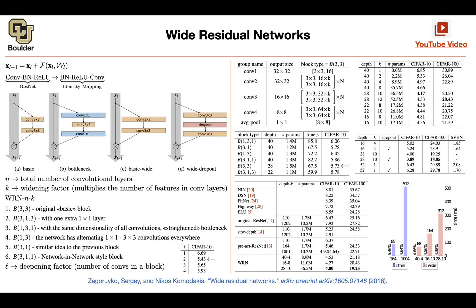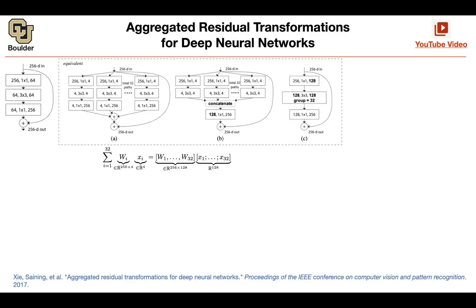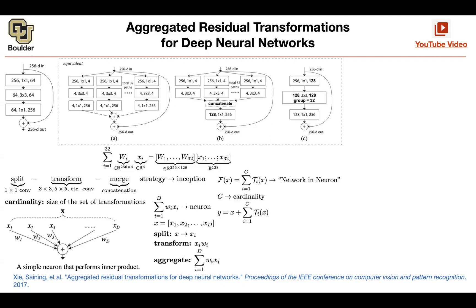We can move on to ResNext. ResNext is borrowing ideas from inception architecture and trying to make it more uniform. In inception architectures you use three by three, five by five, three by one, one by three convolutions. Here you're going to use only three by three. Then you're going to use the ideas of group convolutions, which is good when you are parallelizing your model.